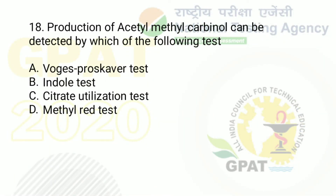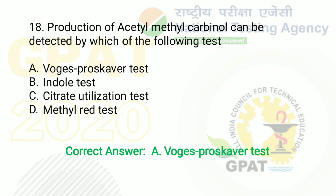Question number 18: production of acetyl methyl carbonyl can be detected by which of the following tests. Option A: Voges-Proskauer test. Option B: indole test. Option C: citrate utilization test. Option D: methyl red test. The right answer is option A — Voges-Proskauer test.